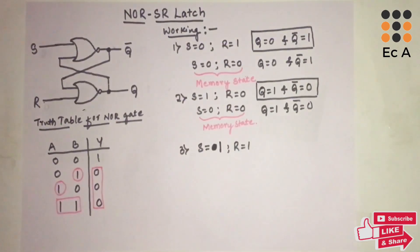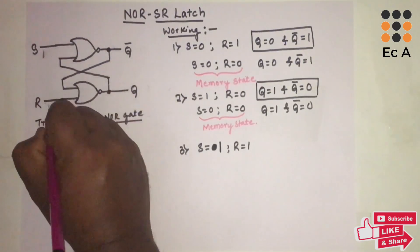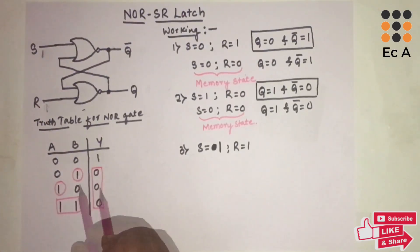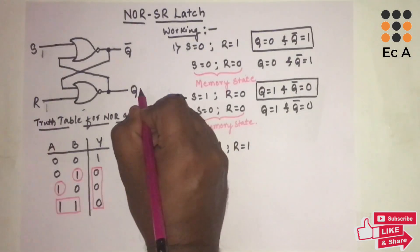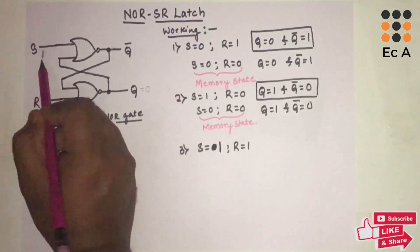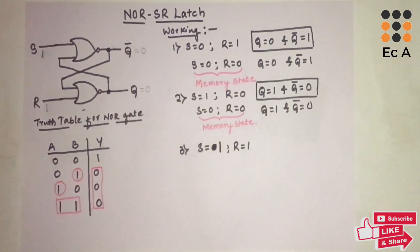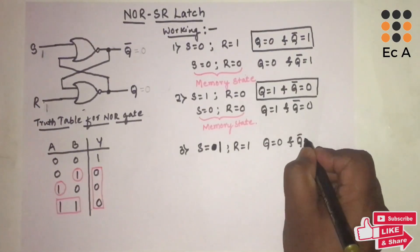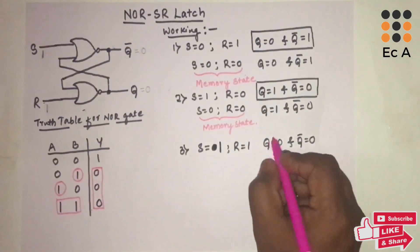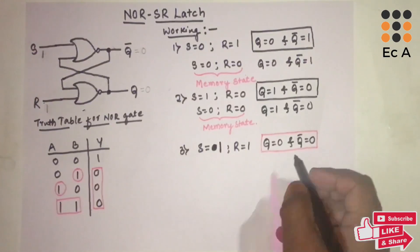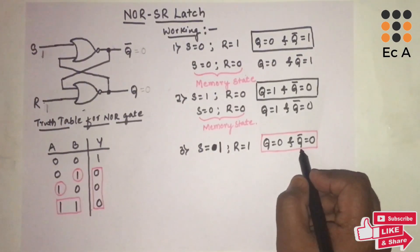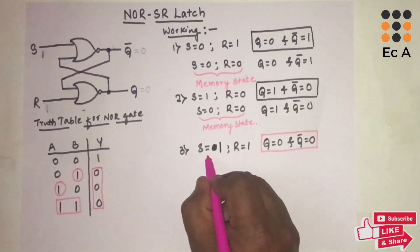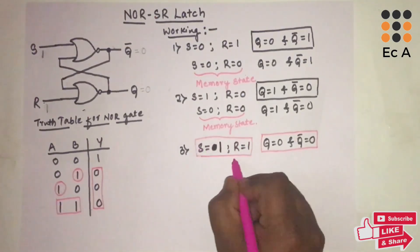Now let us take the third case: S=1 and R=1. Since any one input being one makes the NOR gate output zero, R=1 forces Q=0, and S=1 forces Q-bar=0. So we get Q=0 and Q-bar=0. Both outputs are the same, which should not happen because Q-bar must be the complement of Q. Therefore, this state is not valid and is called the invalid state.